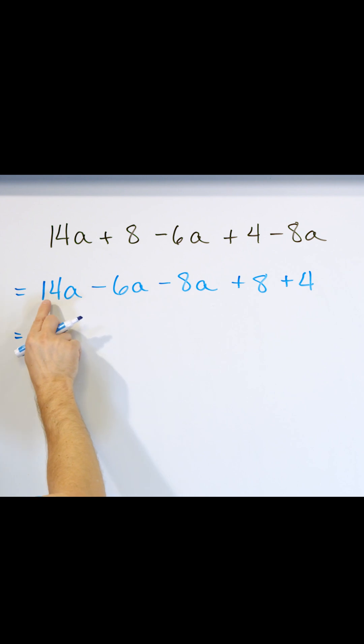And then we go left to right. What is 14 minus 6? 14 minus 6 is 8, so we write it as 8a.